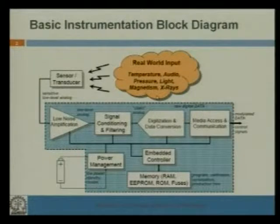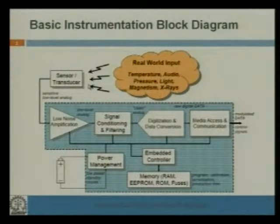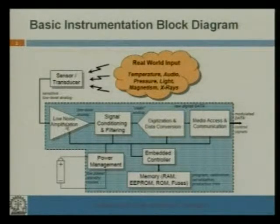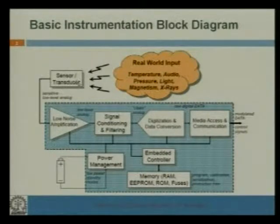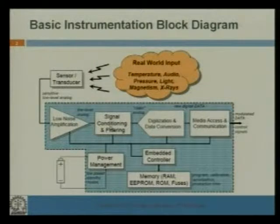The sensor will give an output — that may be a mechanical output or an electrical output. The sensor signal is basically a very weak signal, meaning the signal strength is very low — its amplitude, frequency, or other parameters will be very low. After that, there will be low noise amplification, or it may be a buffer. The sensor output, which may be electrical or mechanical, will be amplified or buffered. Then there will be a signal conditioning and filtering circuit, which will include an amplifier, a filter, and other associated blocks.